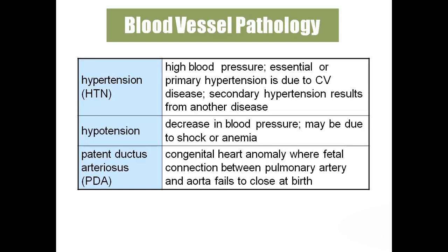Hypotension is decreased blood pressure below 100/70. Next, patent ductus arteriosus — in this condition the baby is born with a connection between the pulmonary artery and aorta. This causes mixing of oxygenated and deoxygenated blood, which is very dangerous to the body and must be rectified.